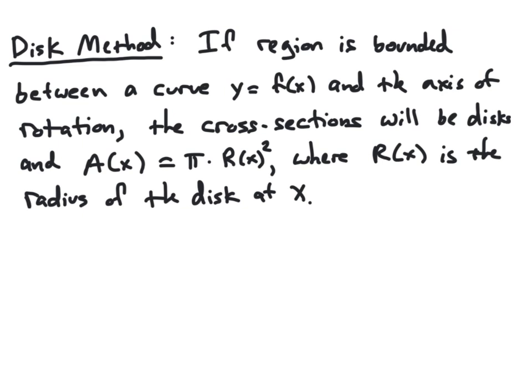The cross-sectional area A of x will always be pi times the radius squared of that particular disk at that value of x. Once we're able to find that radius of the disk, we can see that the volume of our solid is going to be given by the definite integral from a to b of pi times the radius squared, since pi times the radius squared is our cross-sectional area.